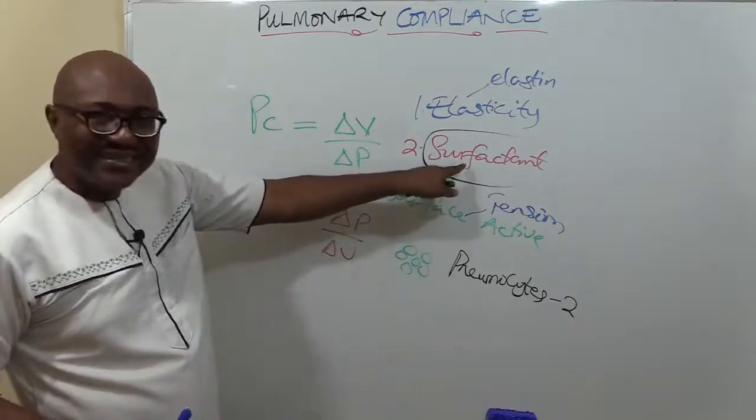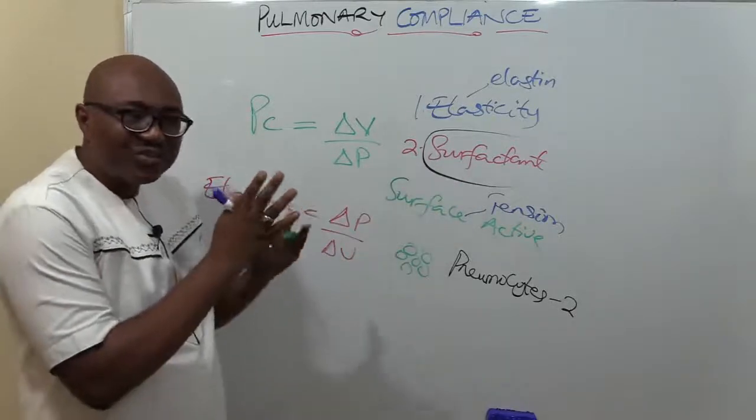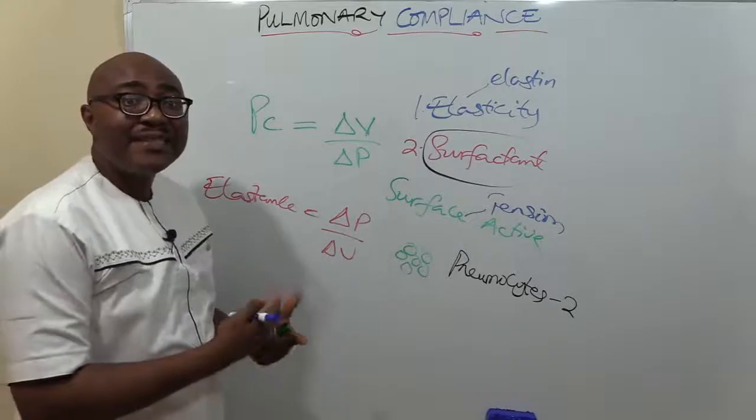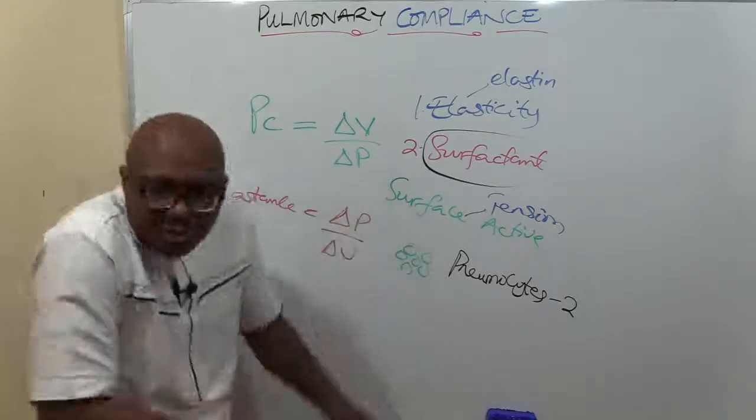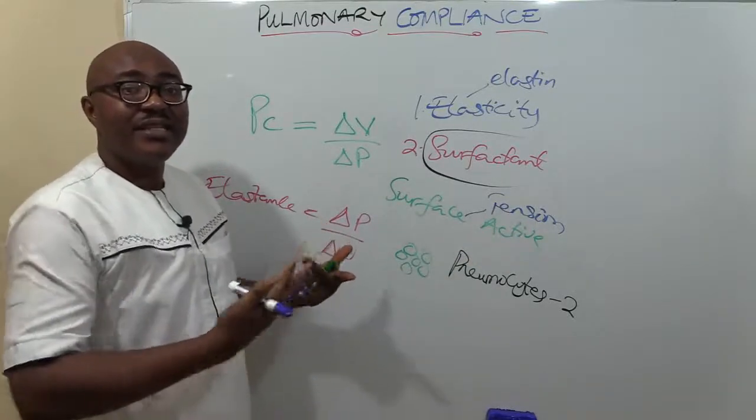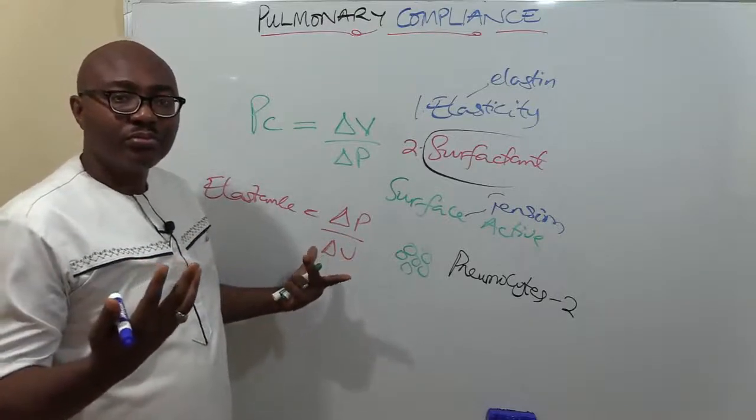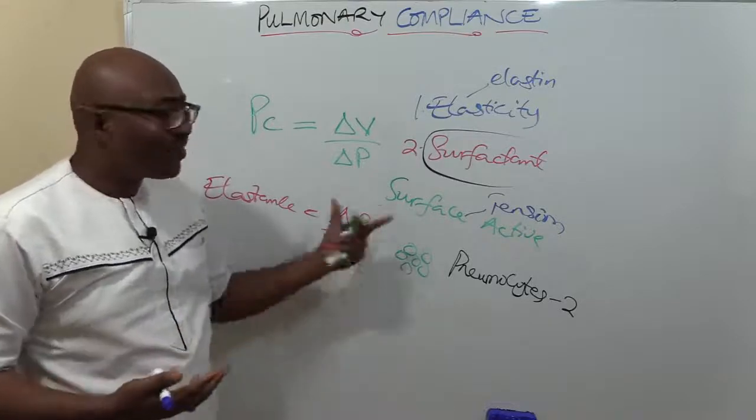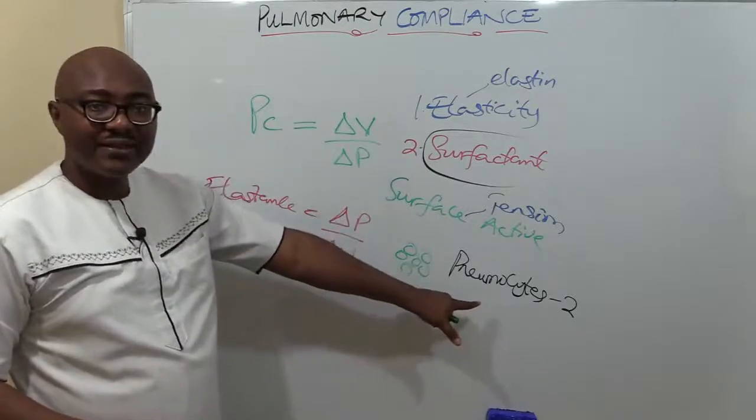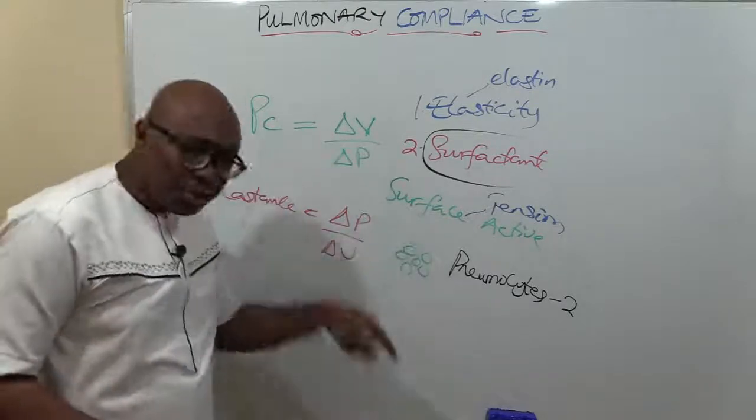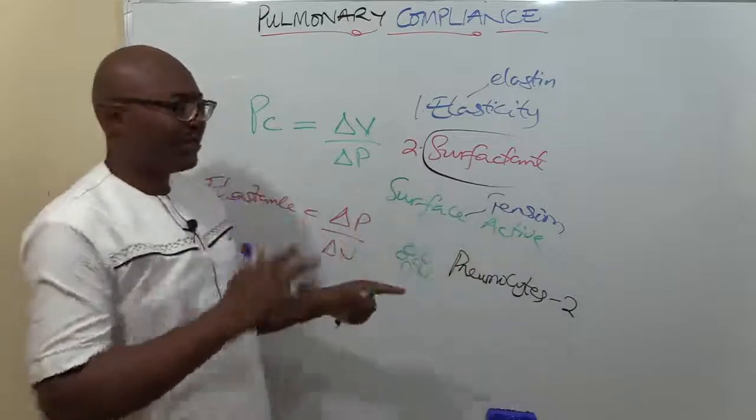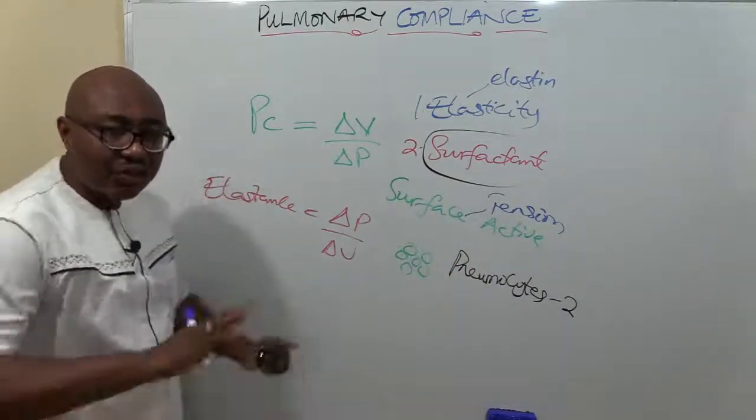When the surface tension is high, it makes them collapse, makes them not easily open up. But there's a solution, and the solution is surfactant. Type 2 pneumocytes secrete a substance that coats the surface of the alveoli and makes it easily open, and by so doing it reduces the surface tension that would not make it easily open up. So it doesn't collapse easily because of surfactant. Note that it's released by type 2 pneumocytes in the alveoli and they reduce surface tension, which is responsible for the collapse of the alveolar sacs.